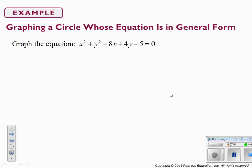Write this equation on your paper: x squared plus y squared minus 8x plus 4y minus 5 equals 0. We're going to graph this by completing the square. First, move the minus 5 over to the other side by adding 5 to both sides, so the constant goes on the right-hand side and will become the radius. Then group the x terms together and group the y terms together.